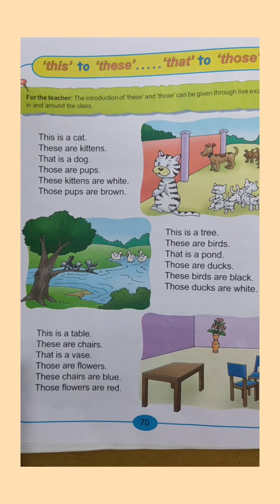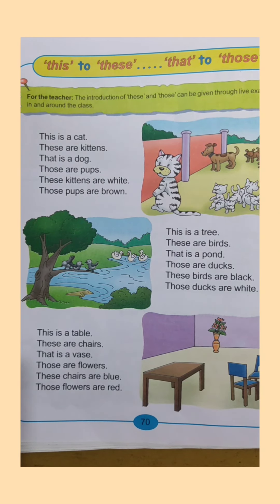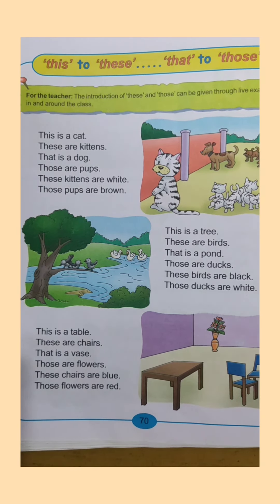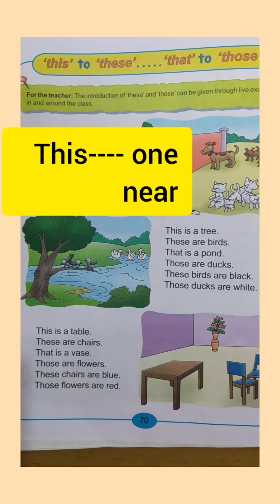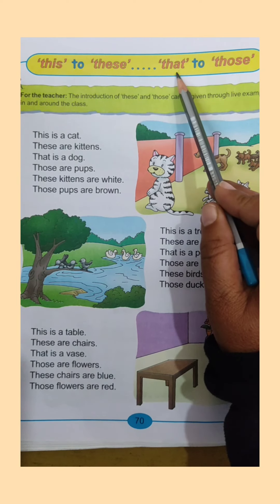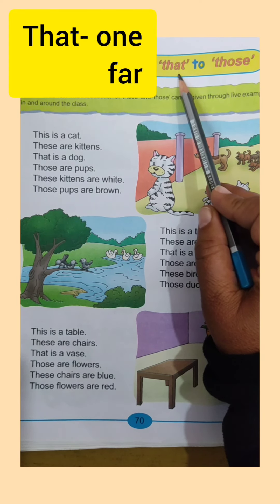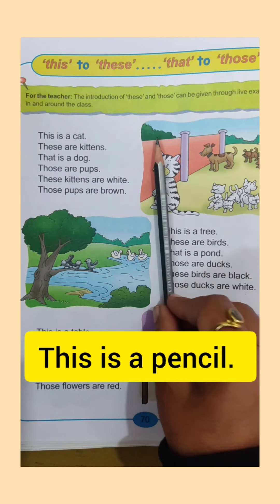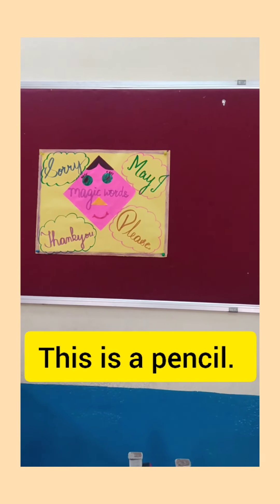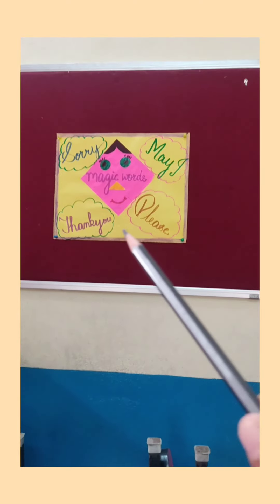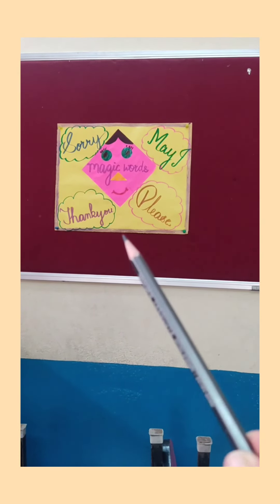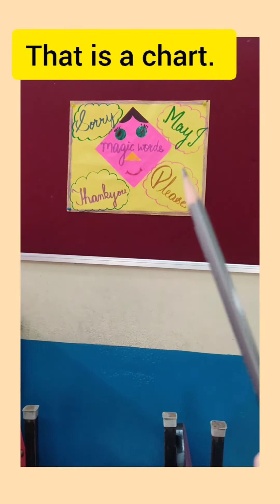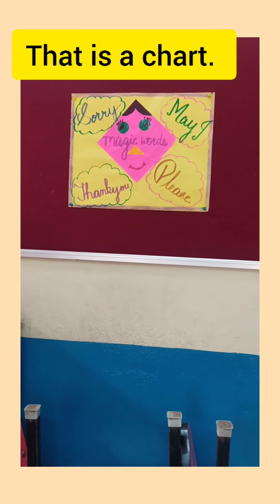Good morning, welcome back to English class. Today we are going to start a new concept: this, to these, that to those. We have learned that 'this' is used for one near object, and 'that' is used for one object that is far away. For example, I am holding a pencil in my hand, so I'll say 'this is a pencil.' But if there is a chart far away, we use 'that,' because 'that' is used for things which are far.